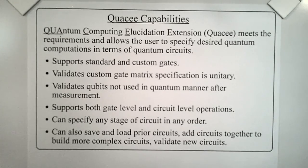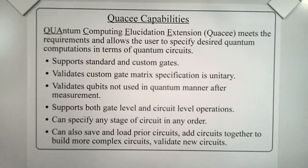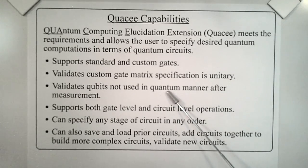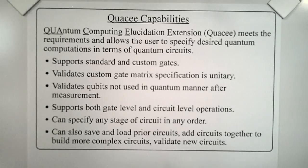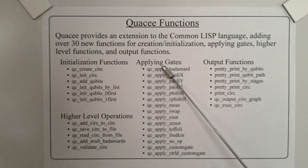Let's take a look at Quasi's capabilities. Quasi is an acronym for Quantum Computing Elucidation Extension. It meets the requirements specified previously and allows the user to specify desired quantum computations in terms of quantum circuits. In addition to meeting those requirements, Quasi also offers these capabilities: it supports standard and custom gates; it validates that the custom gate matrix specification is unitary; it validates that qubits are not used in a quantum manner after measurement; it supports both gate level and circuit level operations; it can specify any stage of a circuit in any order; and it can save and load prior circuits, add circuits together to build more complex circuits, and validate new circuits. Quasi provides an extension to the Common Lisp language, adding over 30 new functions for creation and initialization, applying gates, higher level functions, and output functions.